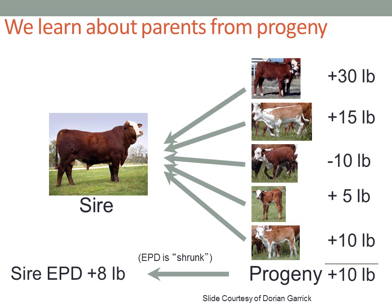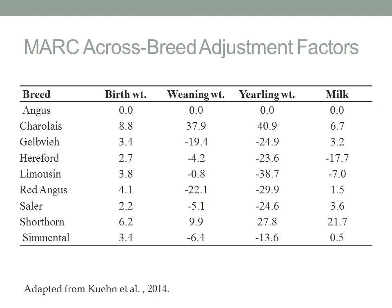We shrink these EPDs according to our degree of belief in them, and that's really associated with the accuracy value that goes along with EPDs. For a high-accuracy sire — a proven AI sire — these EPDs wouldn't be shrunk much because we have a very high degree of belief in them. But for a low-accuracy sire, we know there's considerable uncertainty, and as a consequence we shrink them even more.